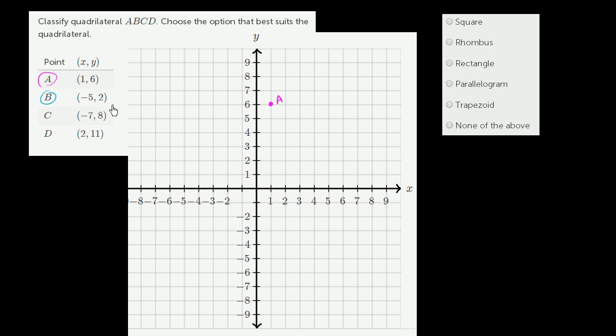Point B is at negative 5 comma 2. Negative 5 comma 2, that's point B.